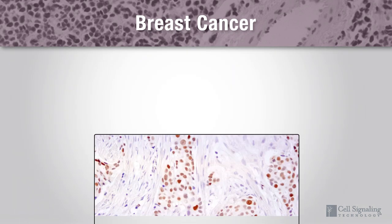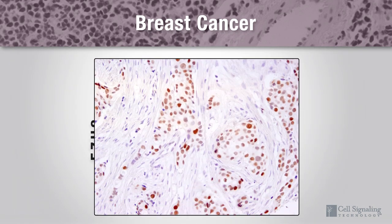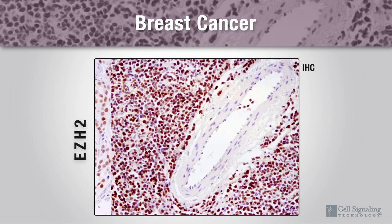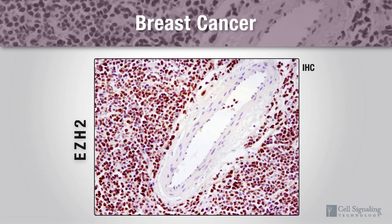The protein EZH2 is overexpressed in many cancers including breast cancer. EZH2 silences expression of genes required for the maintenance of cell identity by adding methyl groups to histone H3 lysine 27.